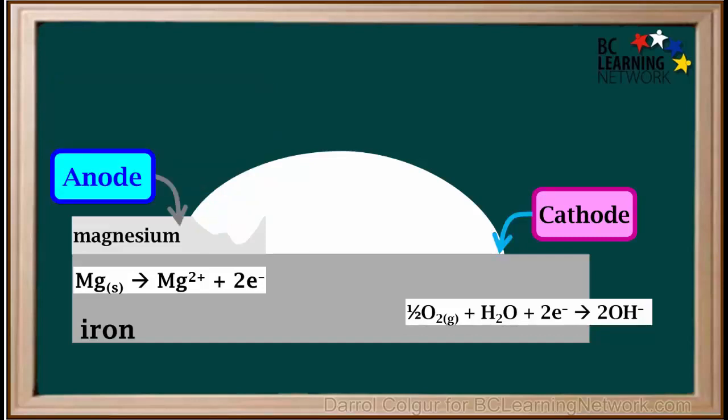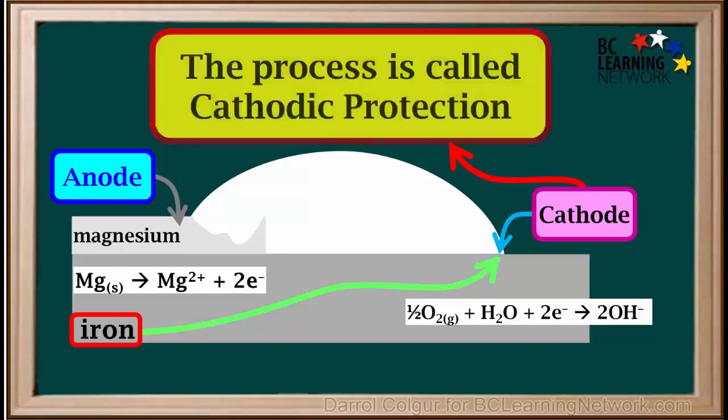When magnesium is present, it is the anode. So, the iron is not the anode. Instead, the surface of the iron acts as the cathode, where oxygen is reduced. That is why the process is called cathodic protection.